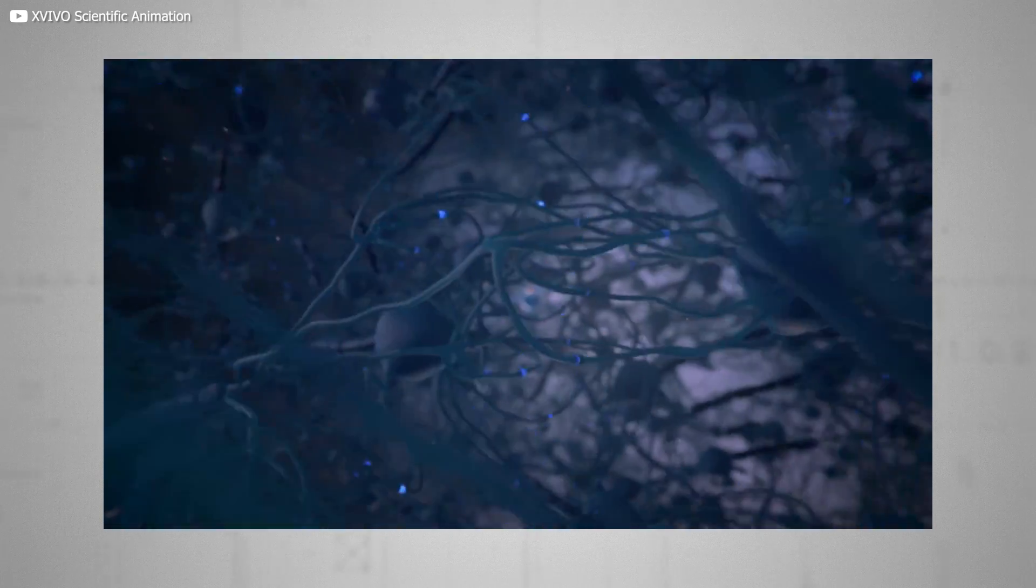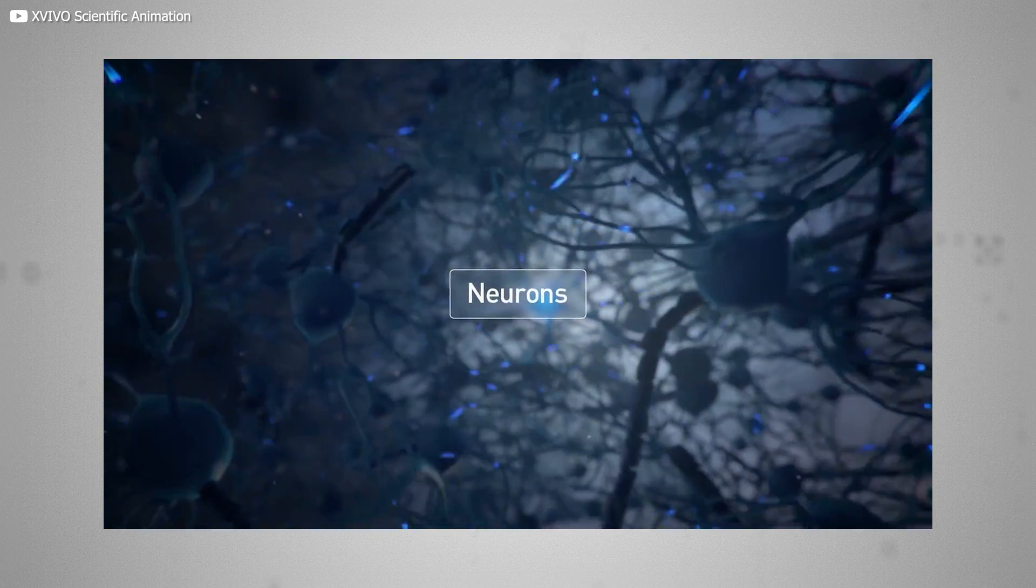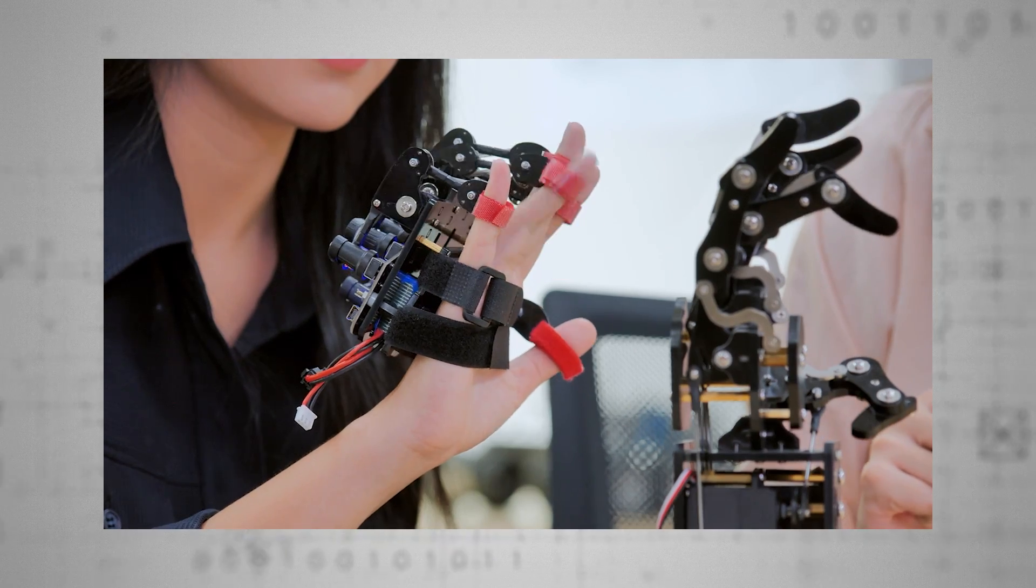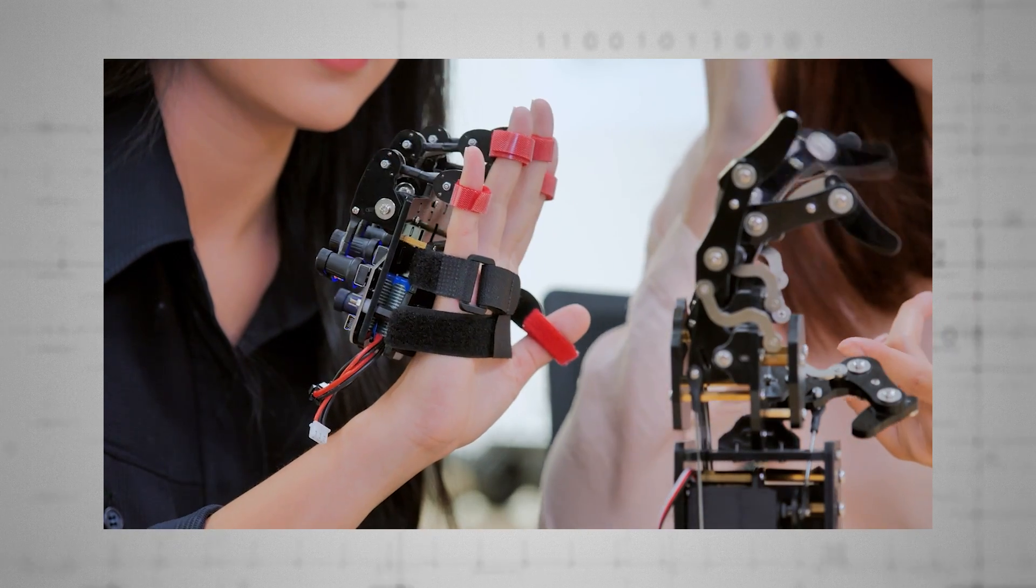Every time your brain performs a function, nerve cells called neurons chatter to each other across connections known as synapses. Everything your brain does, from lifting your right arm to processing the words I'm saying right now, involves a firing of specific synapses from specific neurons.